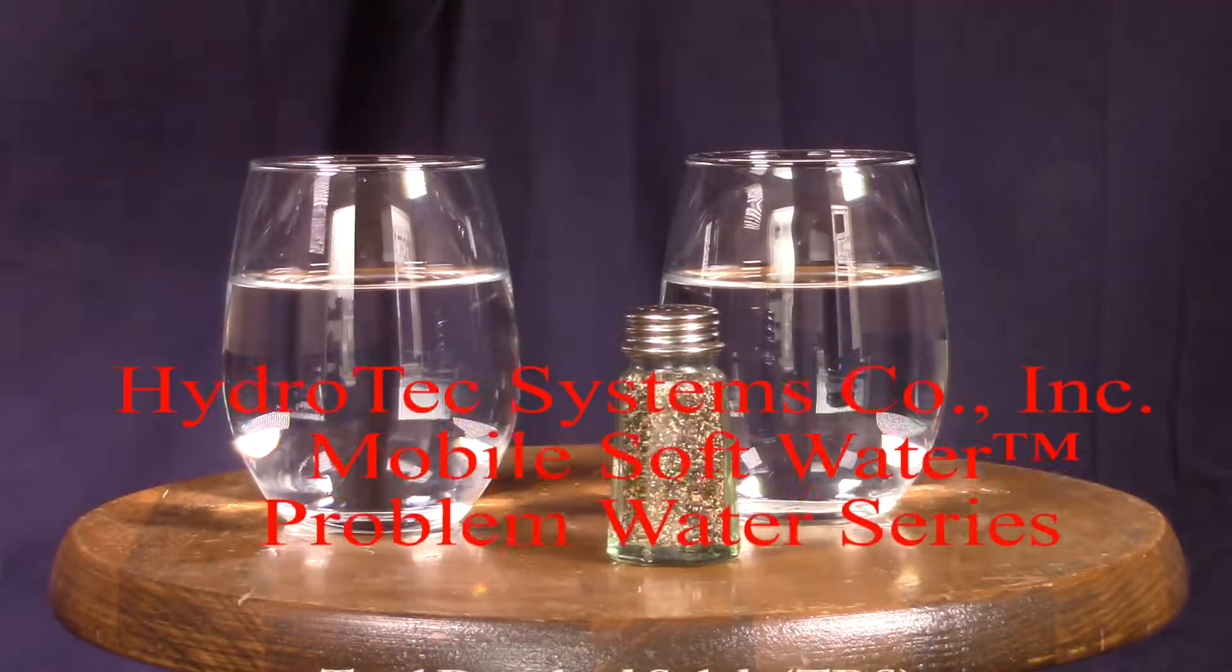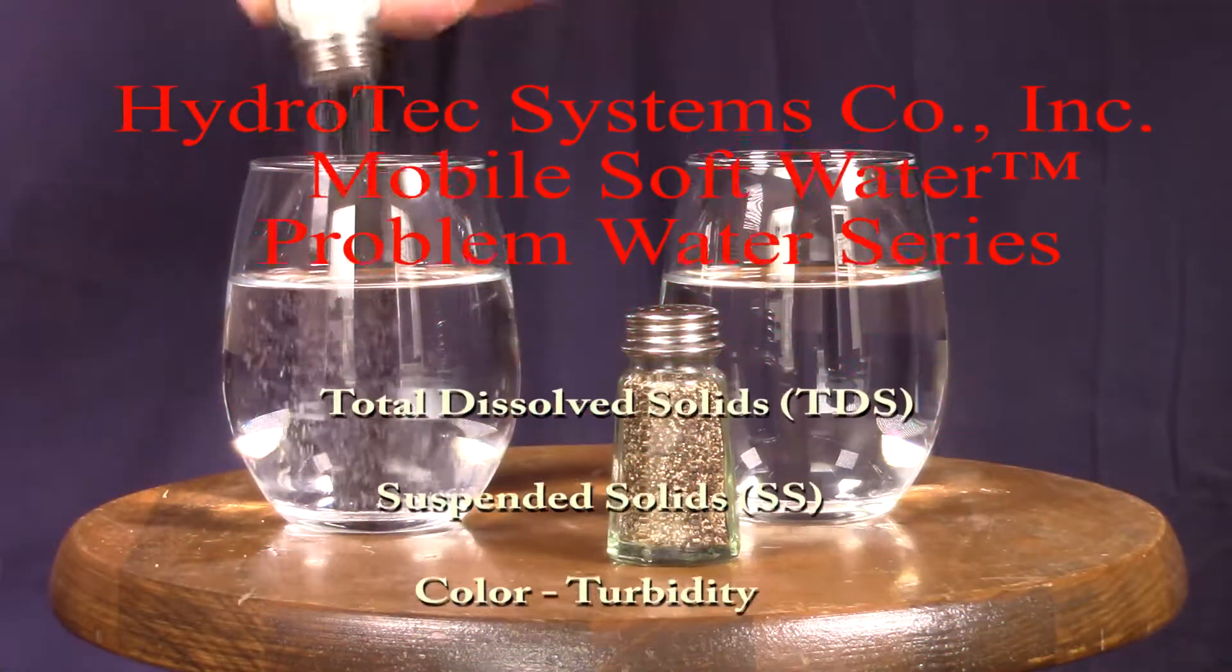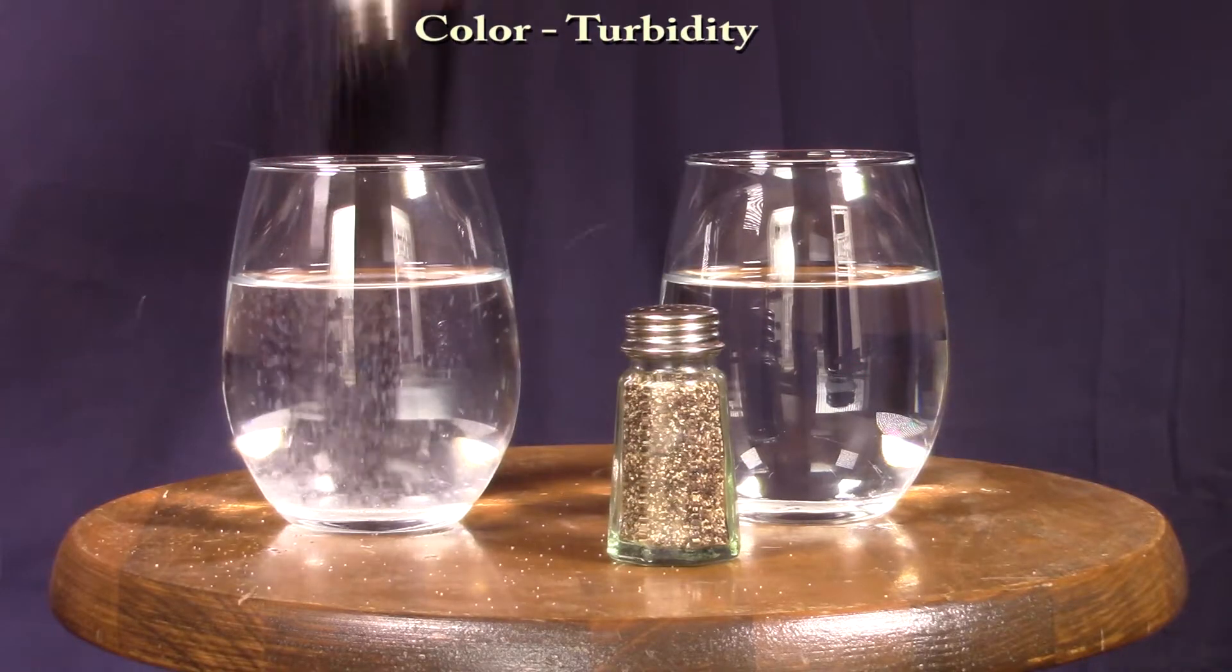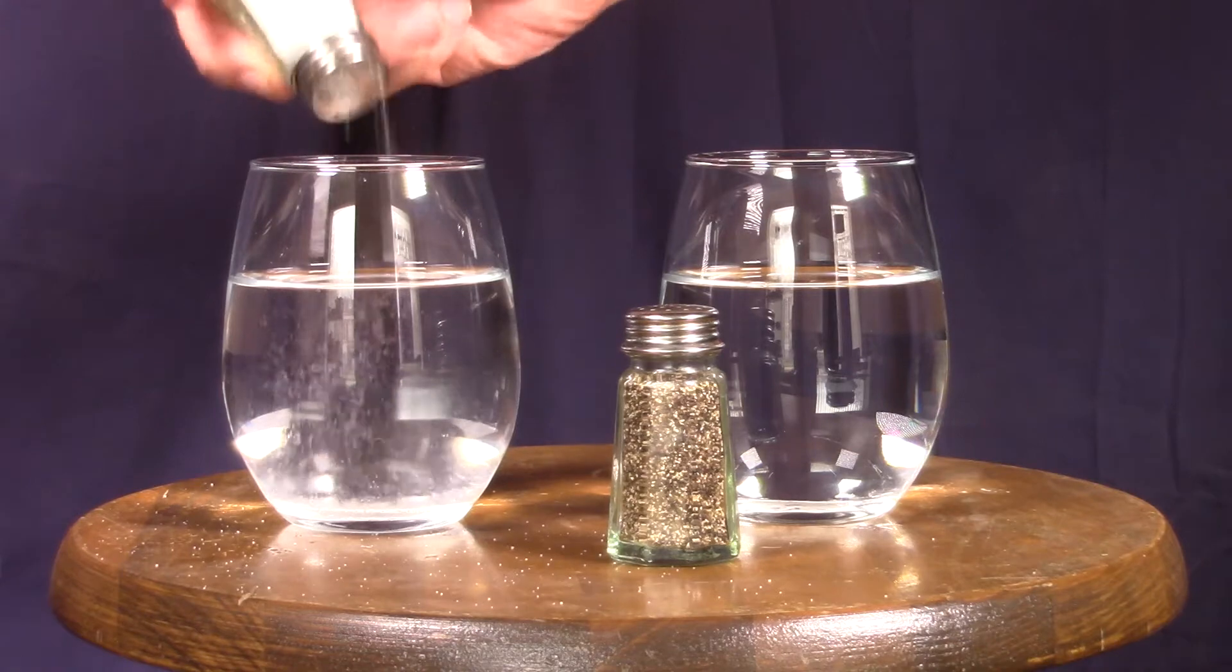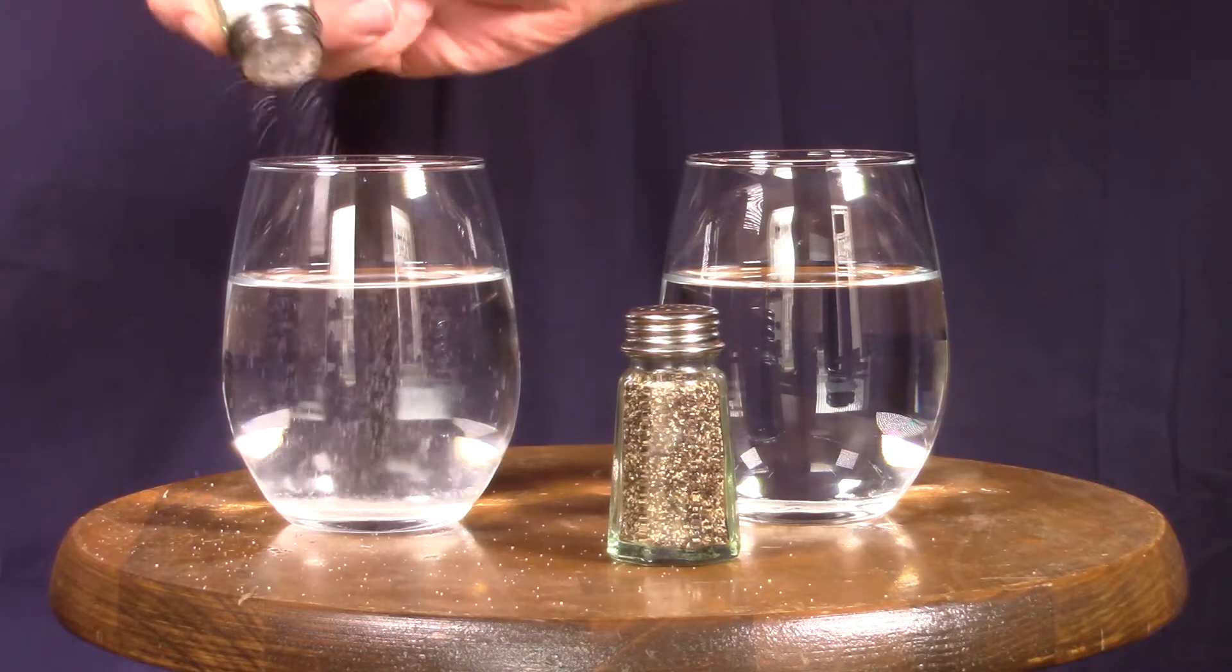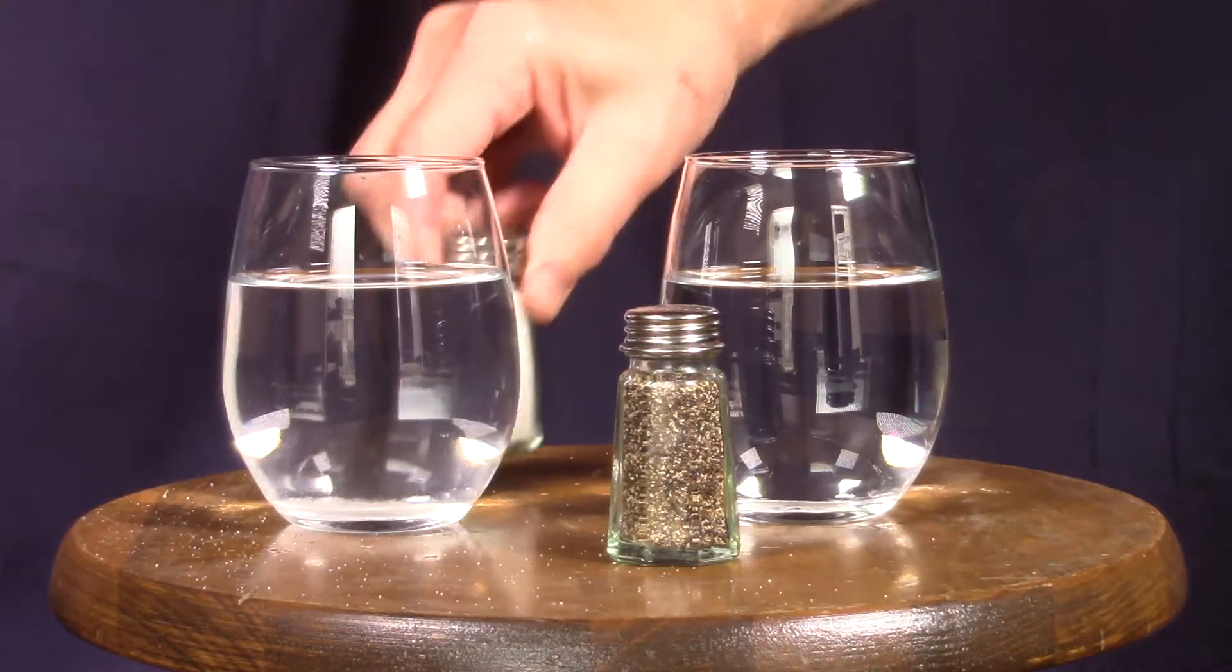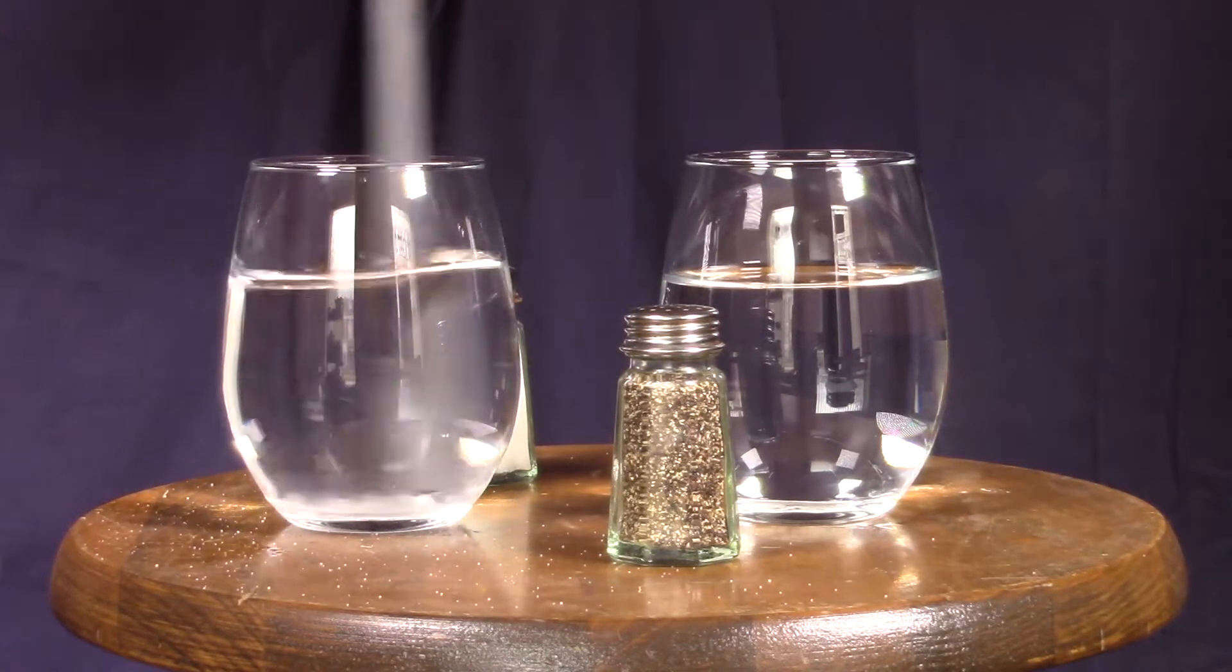Welcome to another one of our series on problem water. Today we're going to look at total dissolved solids, suspended solids, color, and turbidity. In the left-hand glass, we are adding sodium chloride. We're going to add a defined quantity.